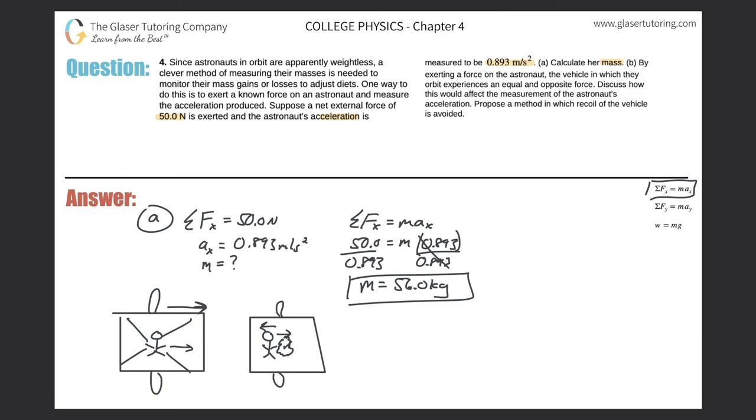We can then figure out the acceleration that this rock, all right, experienced. And if we know the acceleration, and we know the mass of the rock, then we're able to find the force. And whatever force she imparted on the rock would have been the same as the force she imparted basically on herself, all right? So that would be a way around it.